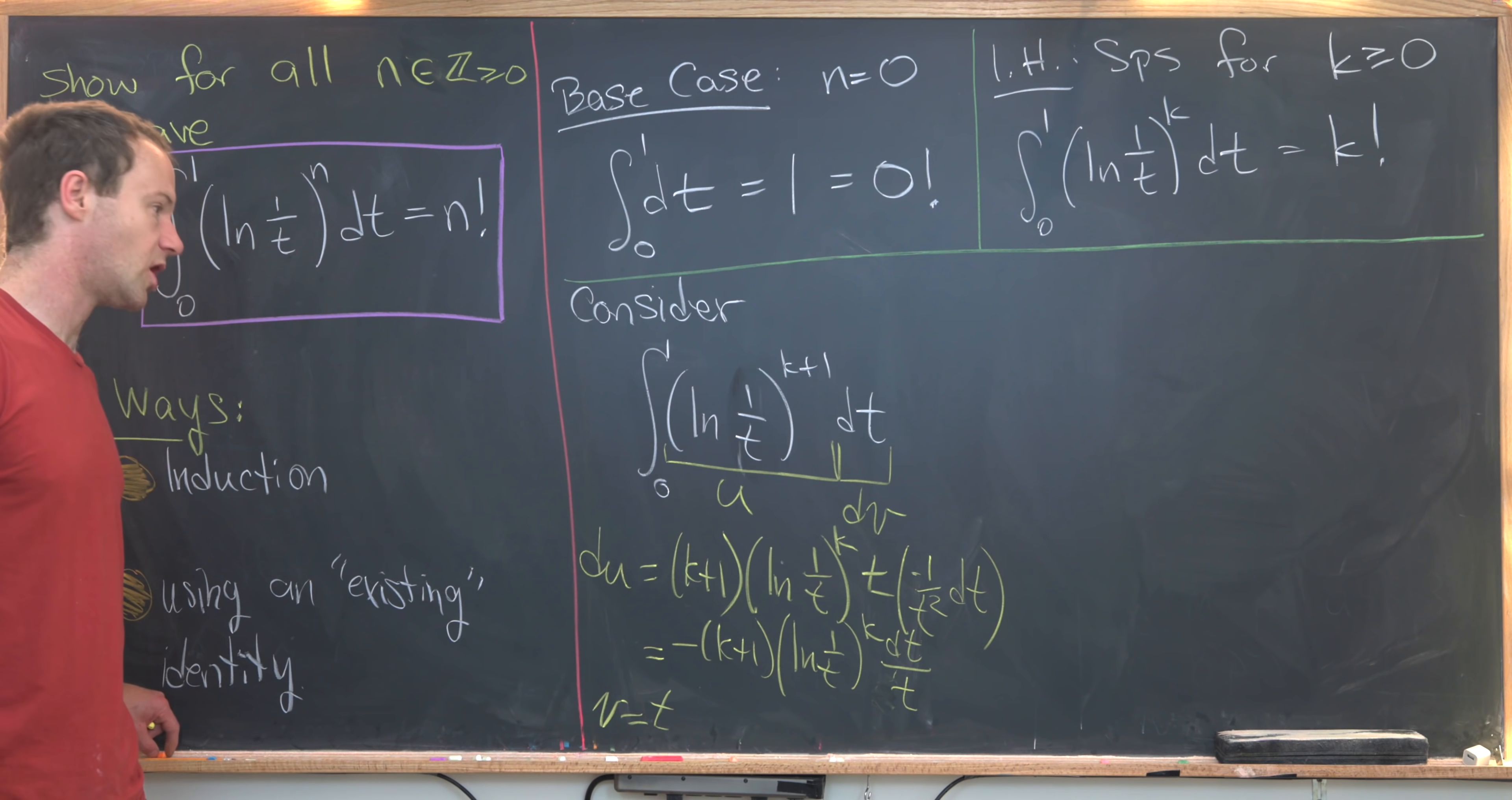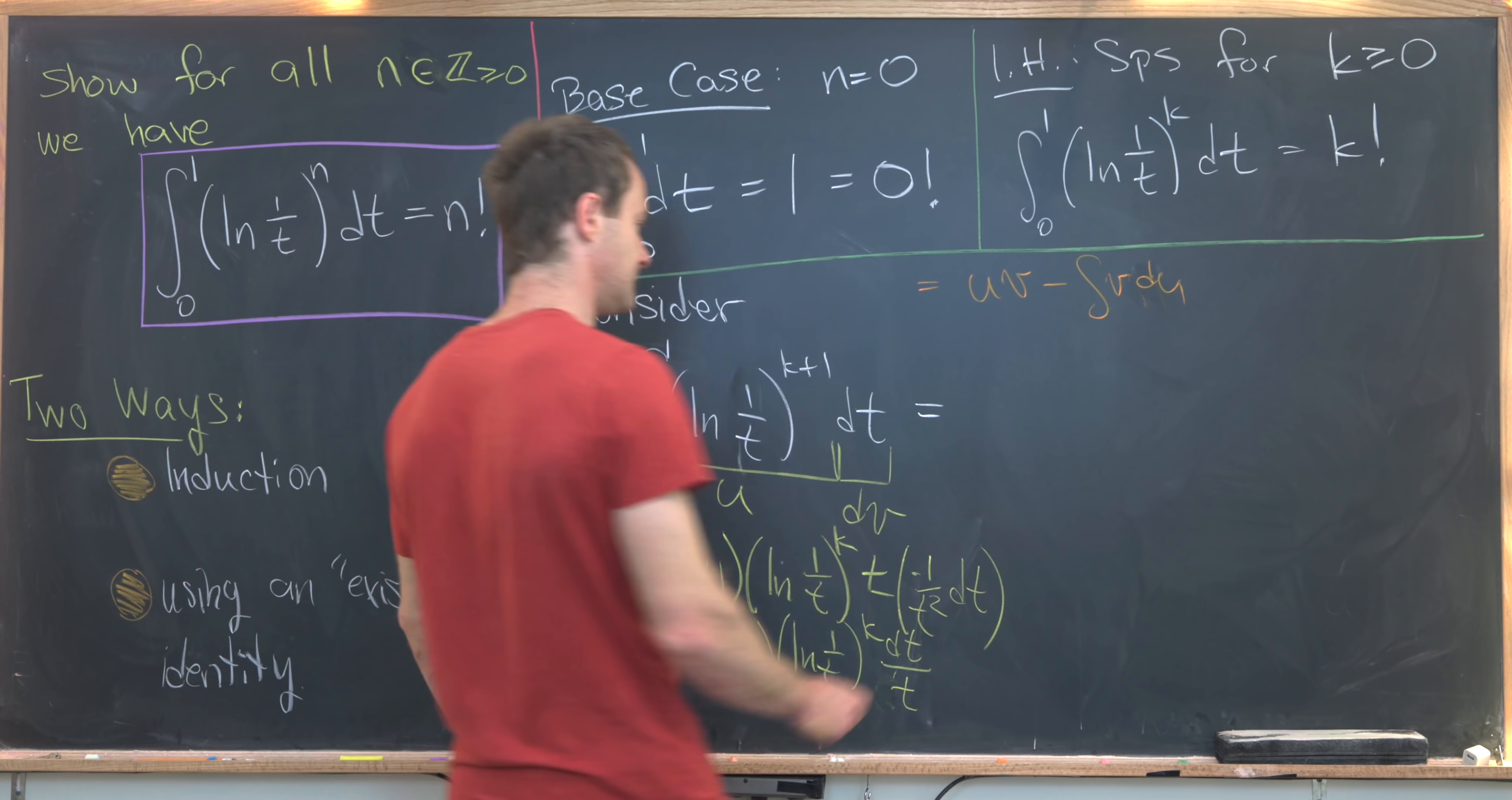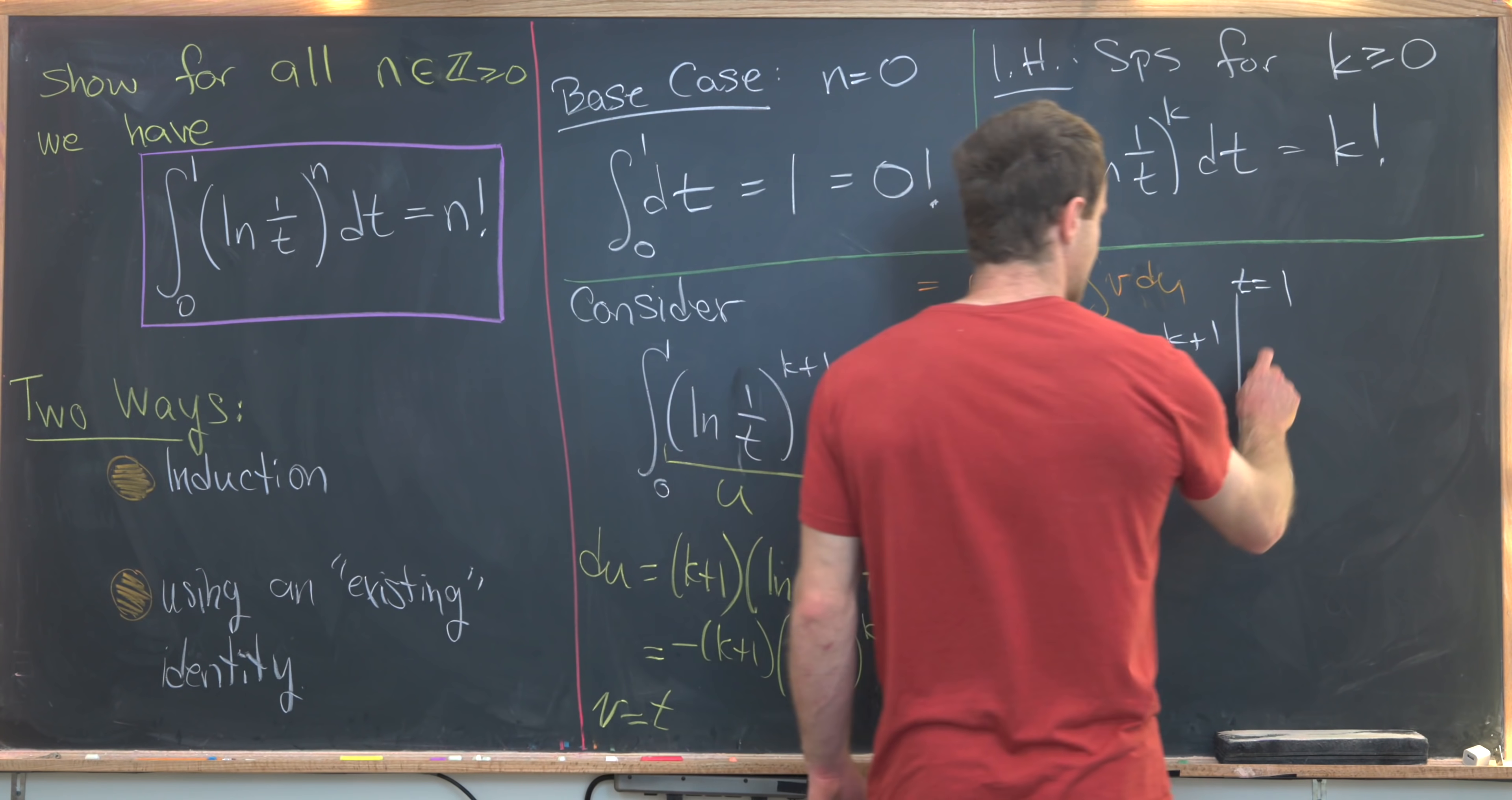And now we'll recall the standard integration by parts formula, which will be this is equal to uv minus the integral of vdu. And that'll allow us to rewrite this as u times v. That's going to be t times the natural log of 1 over t, all raised to the k plus 1st power evaluated from t equals 0 to t equals 1. And then we have minus the integral of vdu. So notice this minus sign is going to cancel with this minus sign, and we'll be left with a plus.